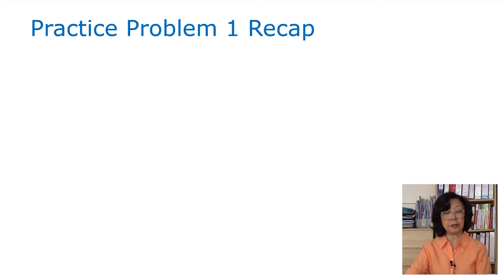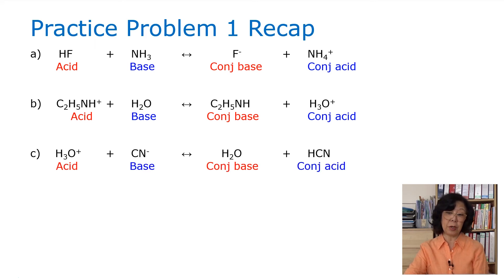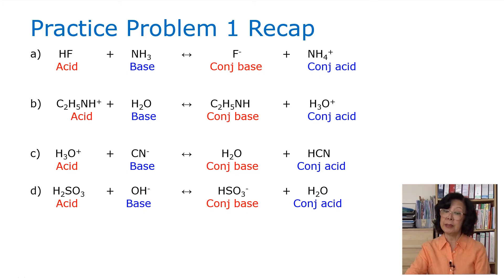The following slide shows you the answers. The first one, we have F- ion formed, which is a conjugate base of HF, and then we have ammonium ion formed, which is a conjugate acid of ammonia. The second one, we have C2H5OH formed, which is the conjugate base of C2H5OH2+, and then we have the hydronium ion formed, which is a conjugate acid of the water base. This one here, we have water formed, which is a conjugate base of hydronium ion, and we have HCN formed, which is a conjugate acid of CN-. Lastly, we have HSO3- ion formed, which is a conjugate base of the sulfurous acid, and then we have water formed, which is a conjugate acid of the base OH-.